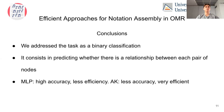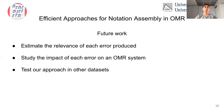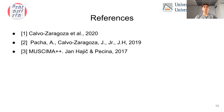To sum up, our contribution consists in predicting whether there is a relationship between each pair of nodes. The MLP has high accuracy but is less efficient, and the asymmetric kernels are less accurate but very efficient. As future work, we want to estimate the relevance of each error produced in an OMR pipeline, study its impact, and test our approach on other datasets. Thank you for your attention.